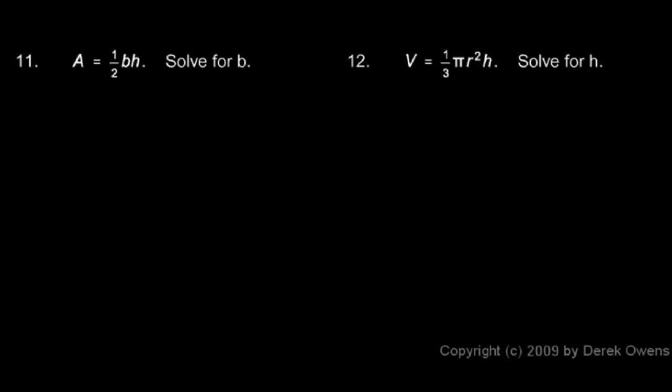In problem 11, we have the formula a equals 1 half bh, and we need to solve it for b. And you probably recognize this formula. This is the area of a triangle.